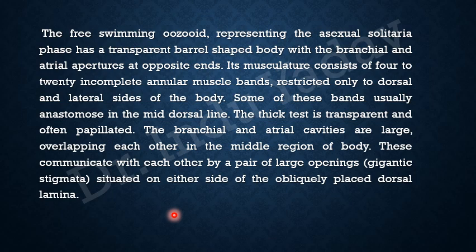The free-swimming zooid representing the asexual solitaria phase has a transparent, barrel-shaped body, with the branchial and atrial apertures at opposite ends. The branchial aperture is on the anterior side and atrial aperture on the posterior side. Its musculature consists of 4 to 20 muscle bands — the least number is 4 and they can be as many as 20.